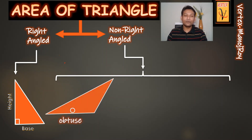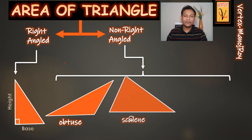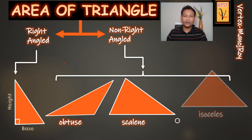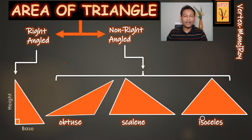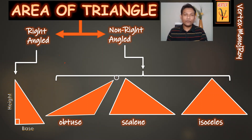For example, I have used an obtuse angle, a scalene, and an isosceles triangle. There are three examples I'm using in this video to find the area of a triangle.